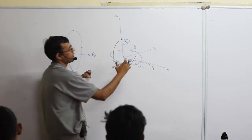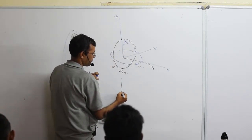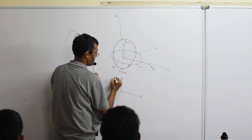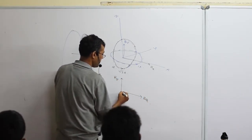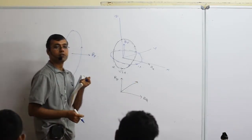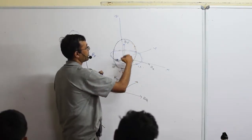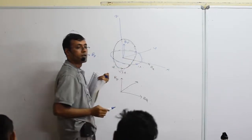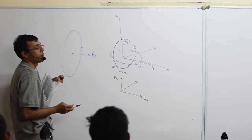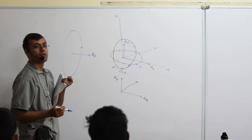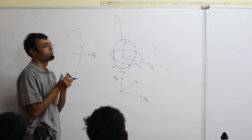Find out B_P separately and B_Q separately, then find the resultant. You know the formula for magnetic field at the center of a circular loop — what is the formula? μ₀I / 2a.